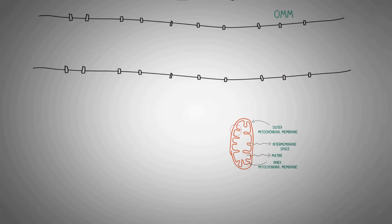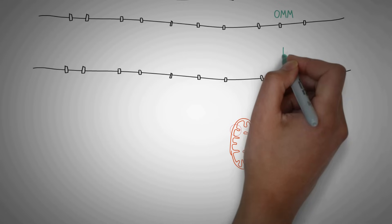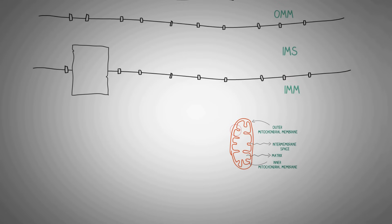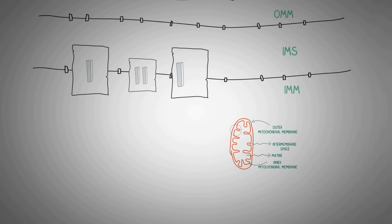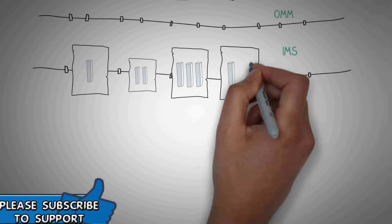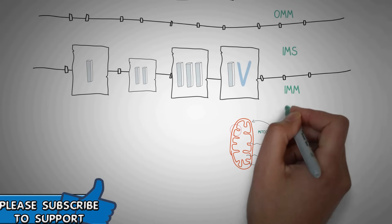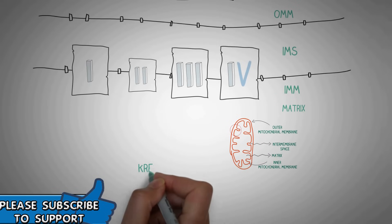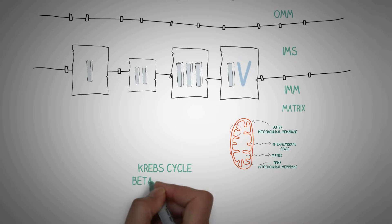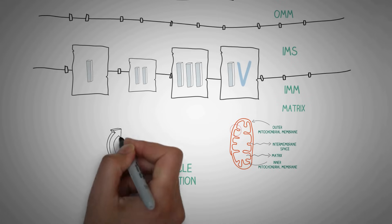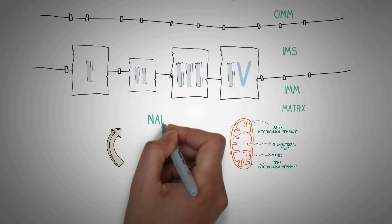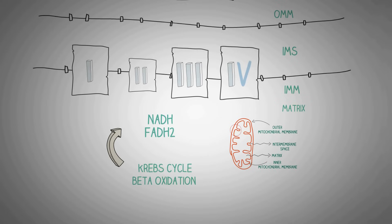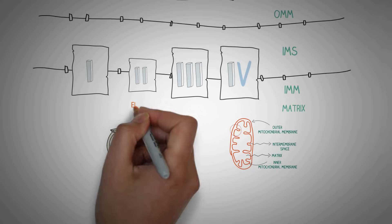Here we have the outer mitochondrial membrane, the inner mitochondrial membrane, and the intermembrane space. The inner mitochondrial membrane contains 4 sets of enzyme complexes, numbered from 1 to 4 in Roman numerals. The matrix of the mitochondria also contains numerous other cycles like Krebs cycle and beta oxidation, which produce reducing equivalents called NADH and FADH2. These reducing equivalents contain electrons which are donated to this set of enzyme complexes.